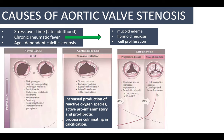The take-home point is: as you age, there is more mechanical stress on your aortic valves. The valve can undergo an inflammatory reaction due to bacterial or rheumatic infection. Someone with hyperlipidemia can have lipid infiltration. All of these lead to myofibroblast differentiation of the aortic valve.